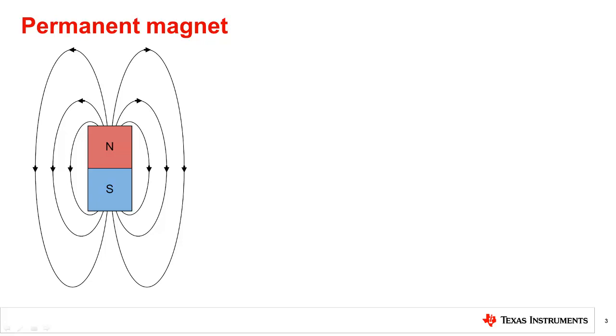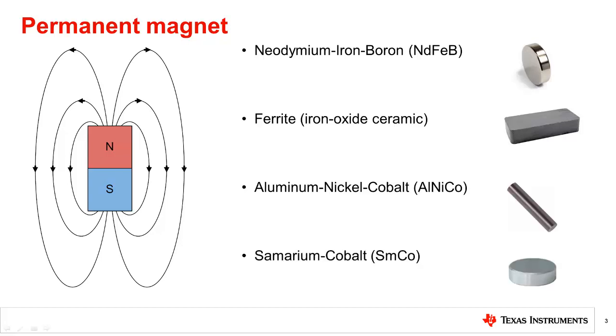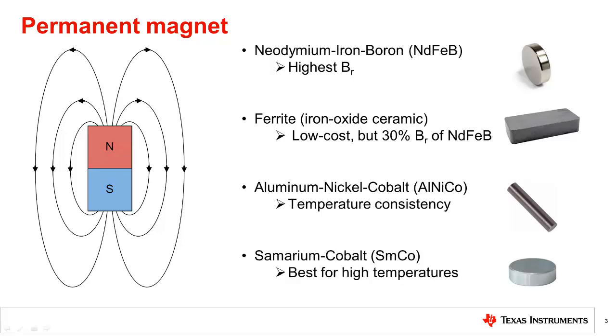The most common permanent magnet materials on the market are neodymium iron boron, ferrite, aluminum nickel cobalt, and samarium cobalt. Neodymium is known for having the highest flux density and resiliency to being demagnetized. Ferrites are known for being low cost, but have weak magnetic properties. Aluminum nickel cobalt has widespread use and has excellent temperature consistency.